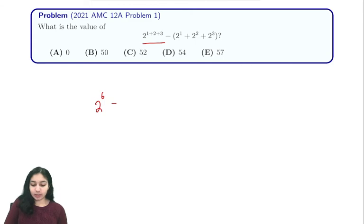For the second part of the expression, we know that 2^1 = 2, 2^2 = 4, and 2^3 = 8. Plugging these into our expression gives us 2^6 - (2 + 4 + 8), which is 2^6 - 14.